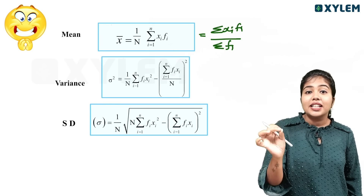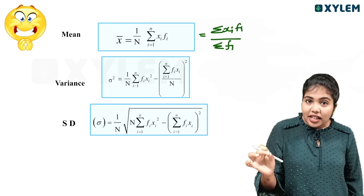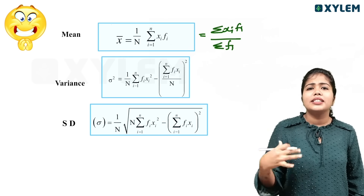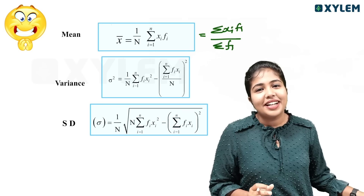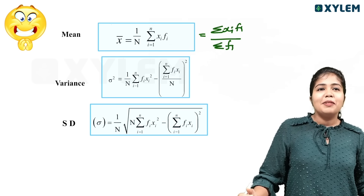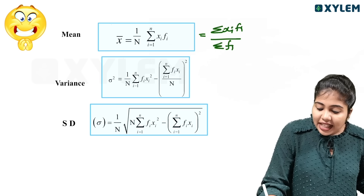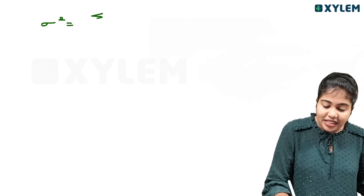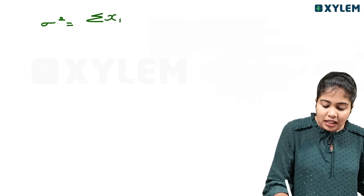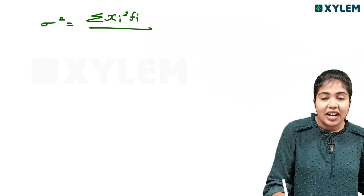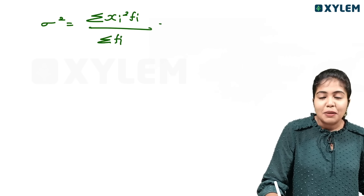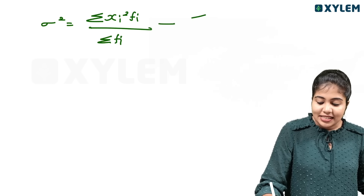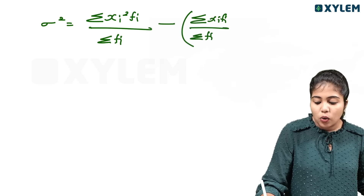For example, if you have the square root of the variance, it will be 8. The equation is very simple: summation xi squared fi, divided by summation fi, minus summation xi fi divided by summation fi, the whole square.